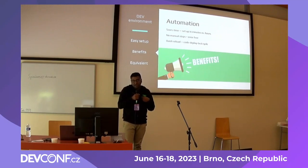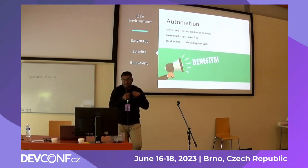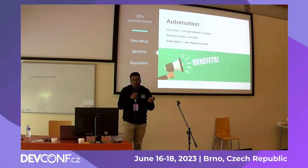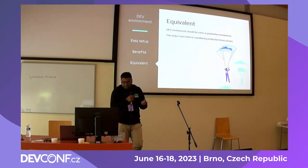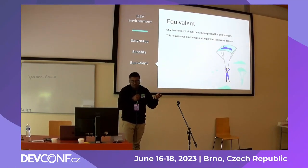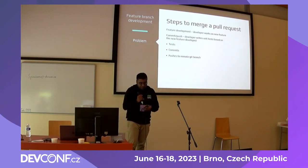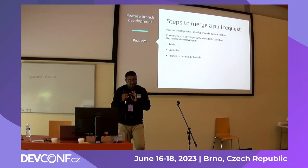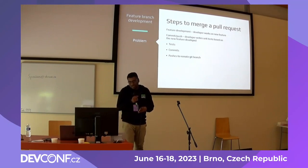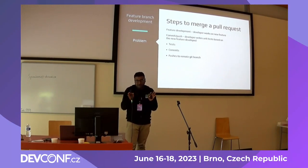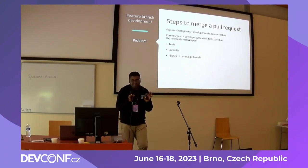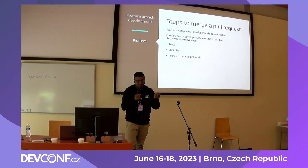I should be able to deploy my changes locally, and the dev environment should be very much equivalent to production. With the current feature branch development, most of you use Git as a source repository. A developer analyzes requirements, creates a feature branch, does coding, writes unit tests, and then pushes the code to the Git repository as a feature request.